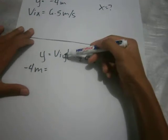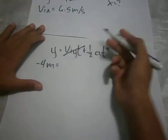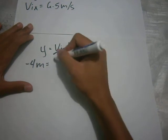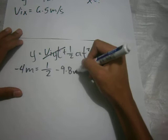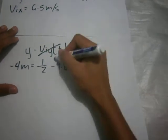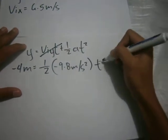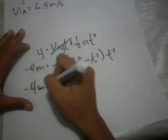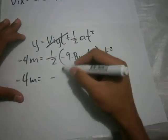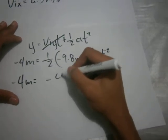This is zero, so we will cancel this. So one-half times negative 9.8 meters per second squared - one-half of negative 9.8 meters per second squared is equal to negative 4.9 meters per second squared.